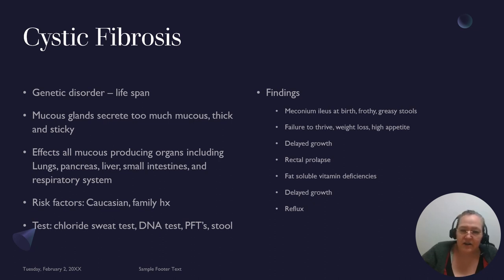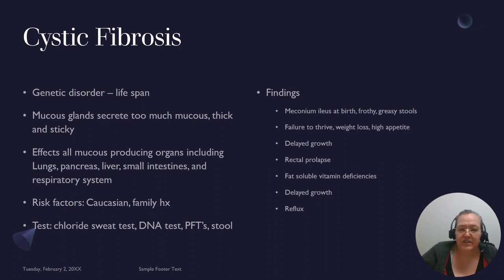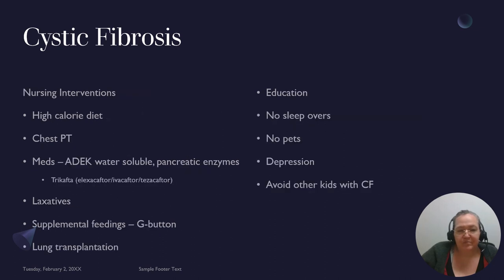Failure to thrive is common in cystic fibrosis. Children often need feeding tubes as they require about double the normal caloric intake due to the energy expenditure of labored breathing. Delayed growth from poor nutrition is common. They can also develop rectal prolapse from severe constipation if medications are not taken properly, vitamin deficiencies, and gastric reflux.